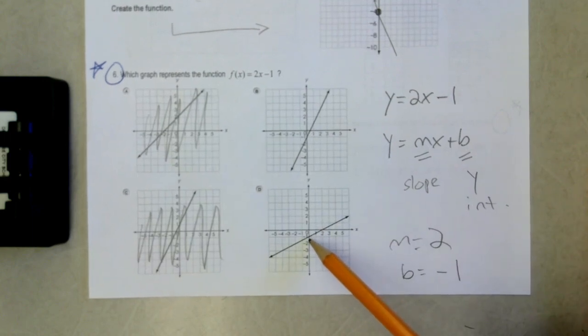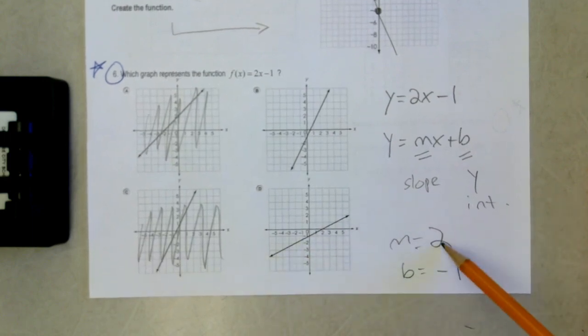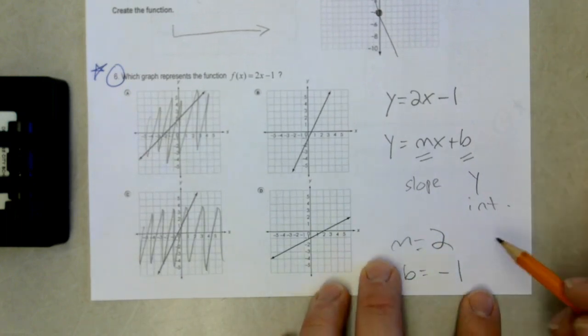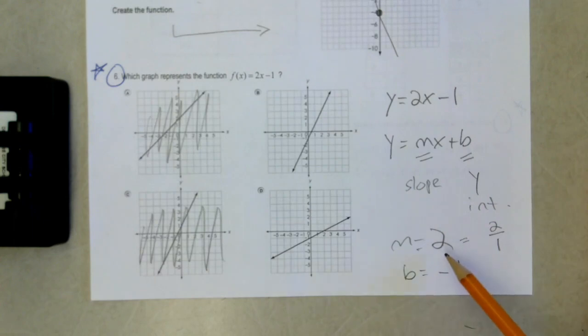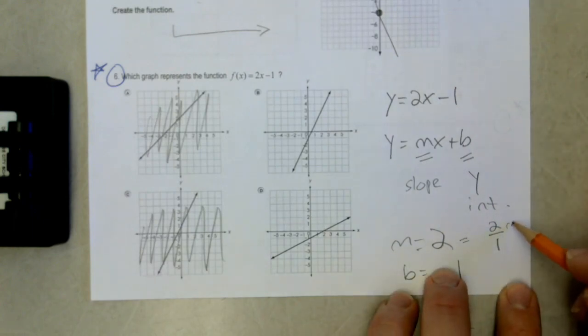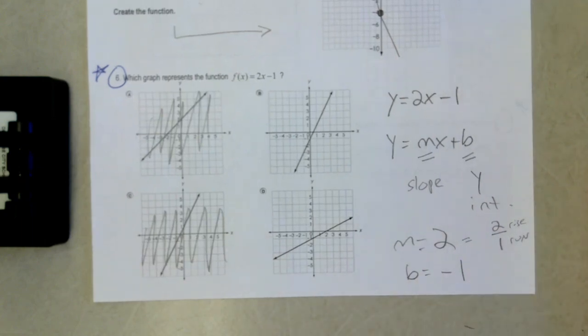If I have a slope of 2, that means my slope is up 2 over 1, because 2 as a fraction is 2 over 1. So 2 is my rise, 1 is my run, so I'm going up 2 over 1, up 2 over 1.